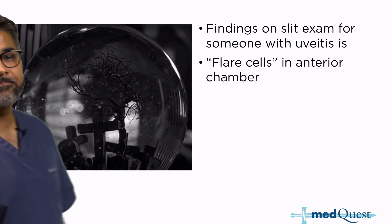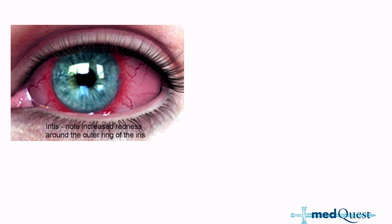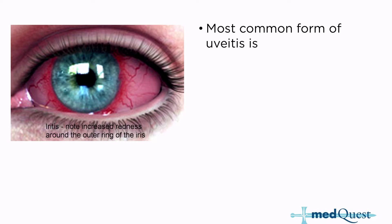Here we have another image. This section is very multimedia heavy. After you've watched this video clip, take some time and cycle through the pictures. Also remember, in your compendium document, the pictures are there as well. The most common form of uveitis — we know that in the anterior chamber you're going to see flare cells. Here you notice iritis with increased redness around the outer ring of the iris. The most common form of uveitis is anterior uveitis, and in this image you see both anterior uveitis as well as iritis.